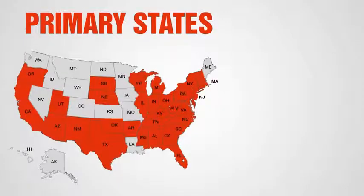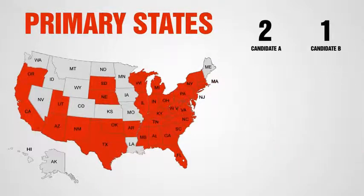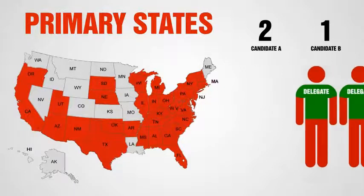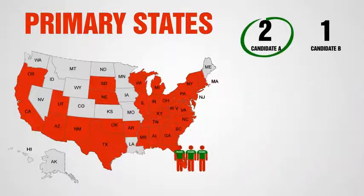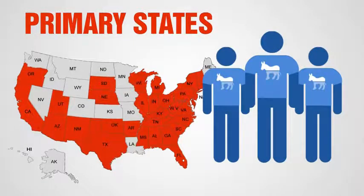In a primary state, registered voters may participate in choosing their candidate by voting in a secret ballot, as in a general election. The specific rules and methods vary among states, but your state will send delegates to the national convention to support the candidate that gets the most votes in the primary. You have to show up at the right time on the right date with as many blue Republicans as you can to vote for Ron Paul.